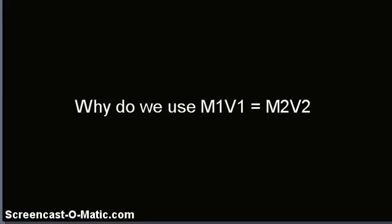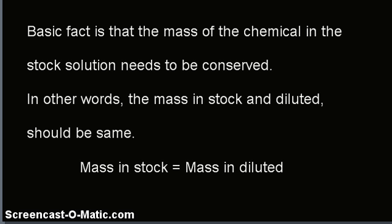Why do we use M1V1 = M2V2 while calculating the dilution from the stock? The basic fact is that the mass of the chemical in the stock solution needs to be conserved. In other words, the mass in the stock and the diluted solution should be the same.